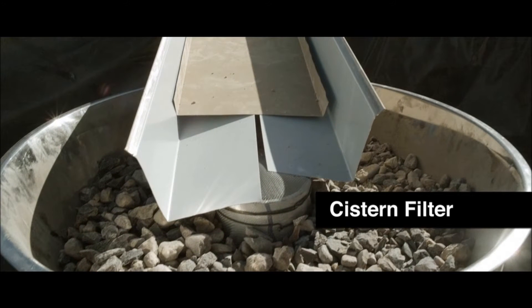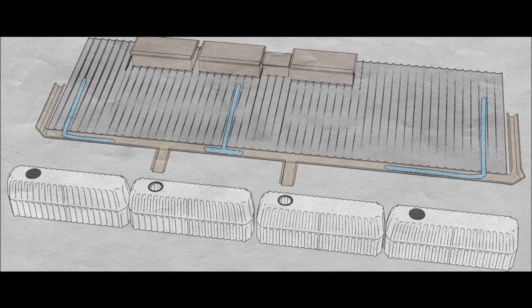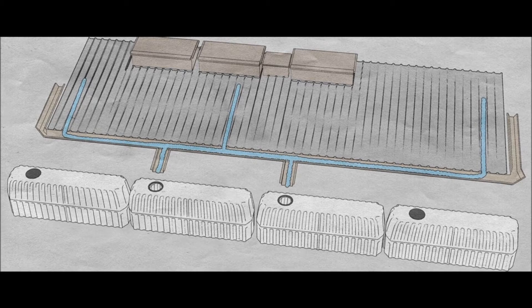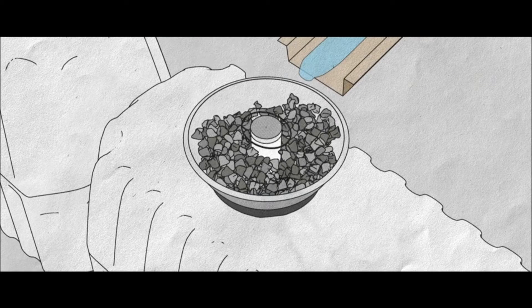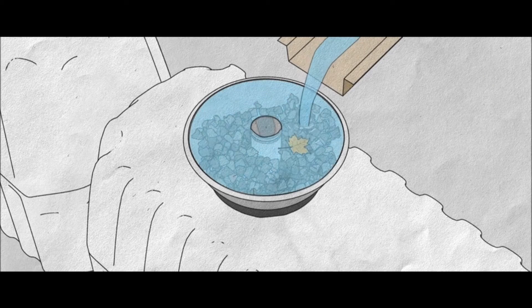Cistern filter. Before any water falls from the gutter into the cistern, you need to filter it with gravel and a silt catcher to keep the unwanted solids out of the cistern.